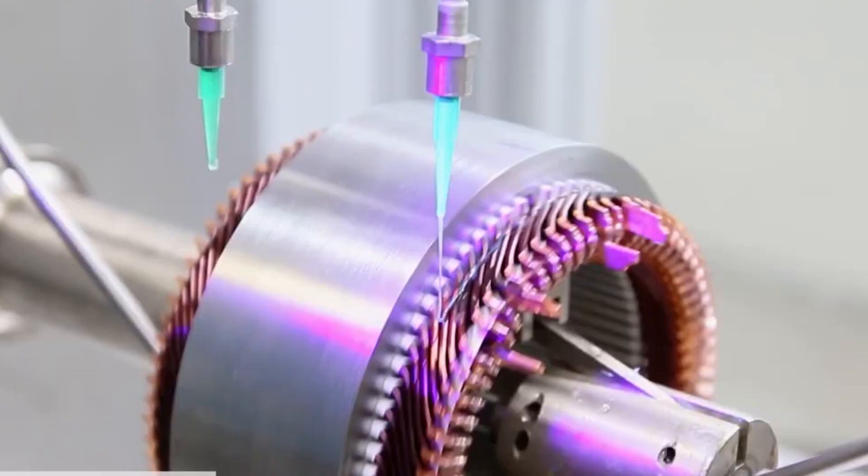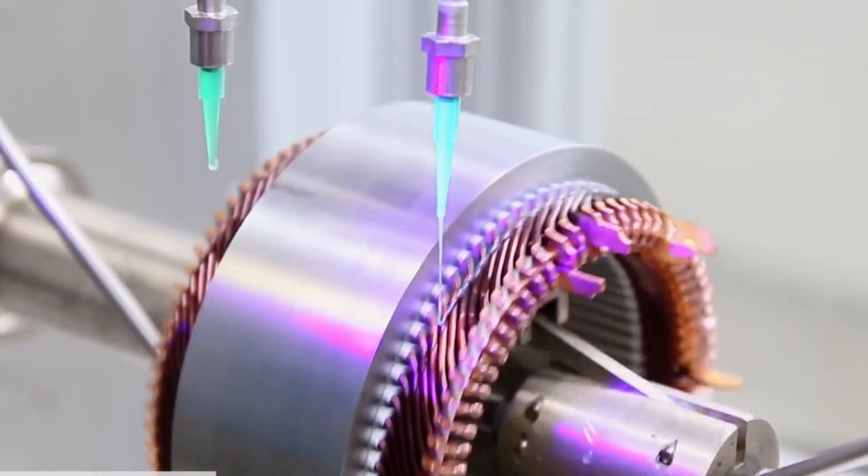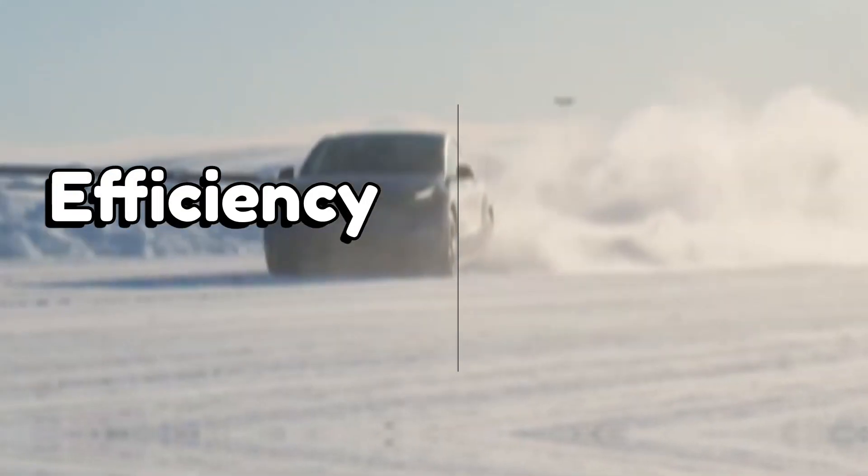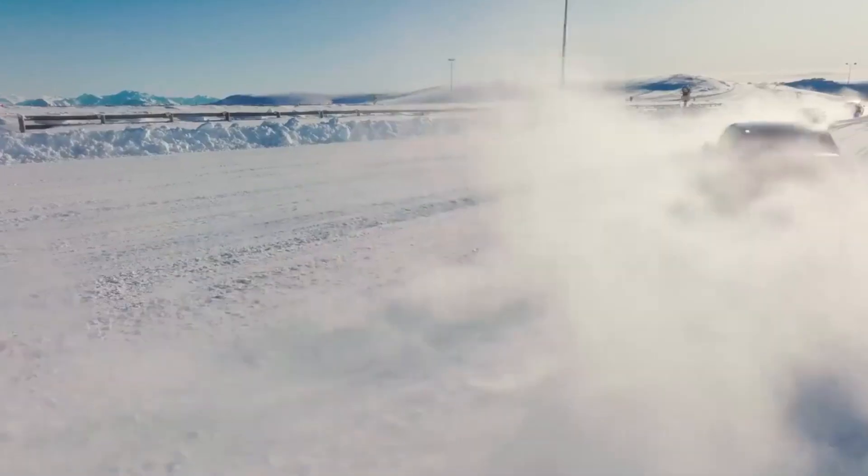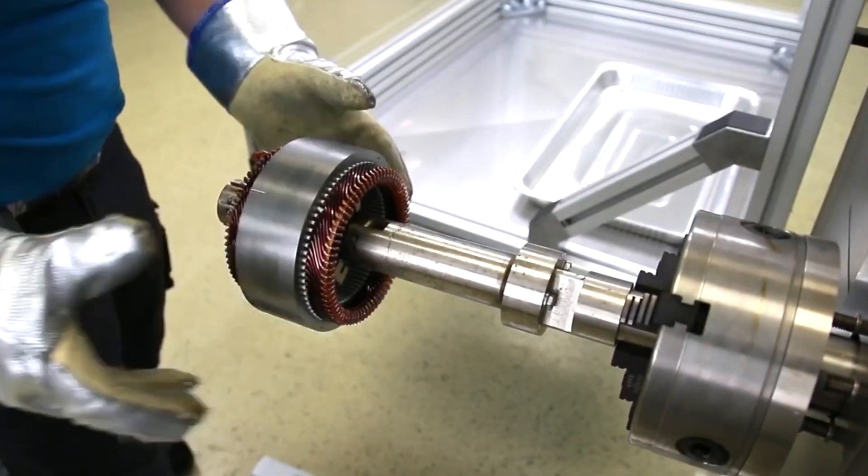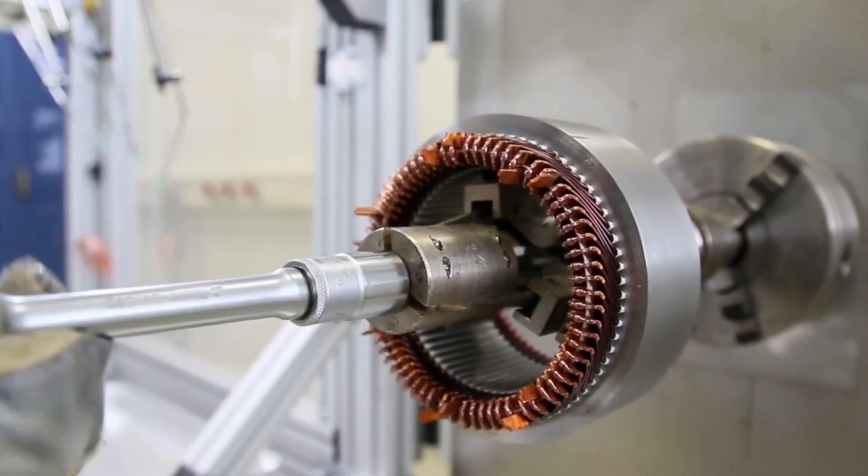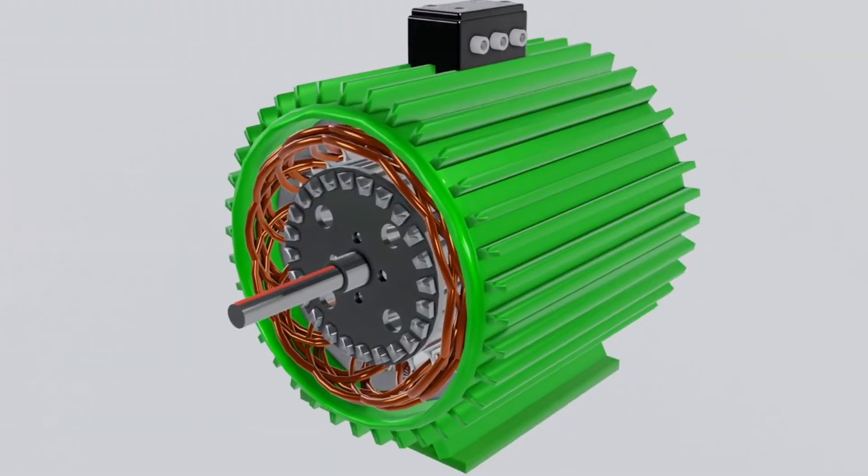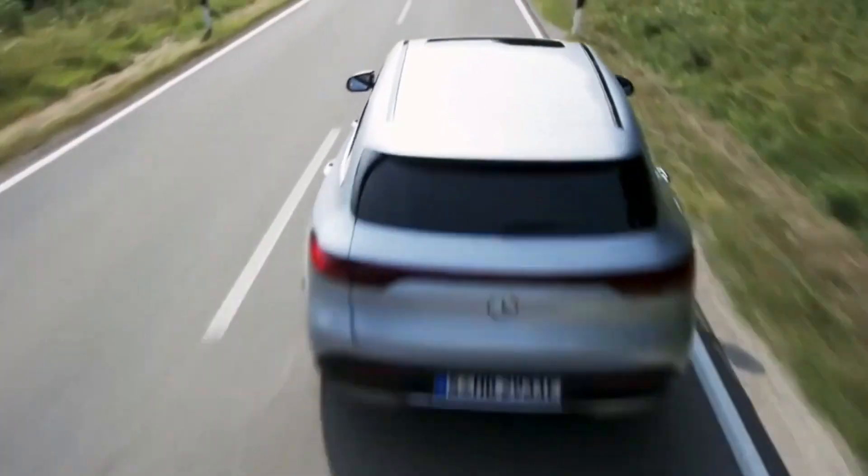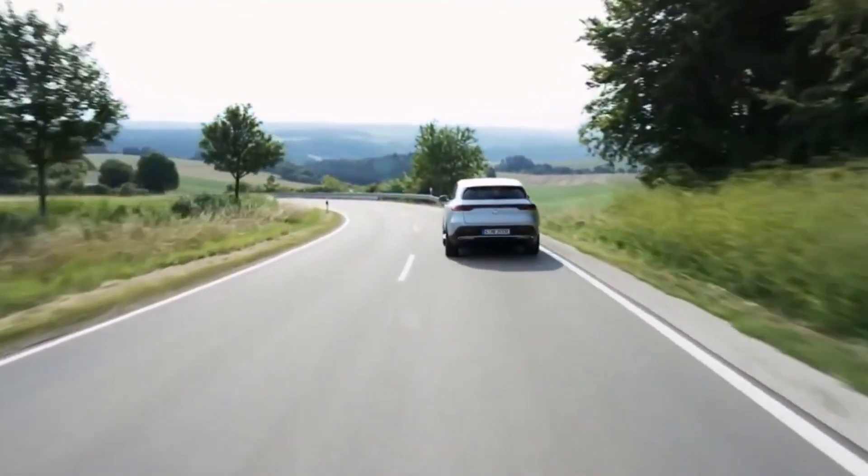One of the significant benefits of using hairpin technology in electric vehicles is the increase in range. This is due to the increased efficiency of the electric motor, which can produce the same amount of power while using less energy. This increase in efficiency is down to the design of the hairpin motor, which reduces losses associated with traditional motors. When the motor operates more efficiently, it requires less energy to run, which results in an increase in the vehicle's range.